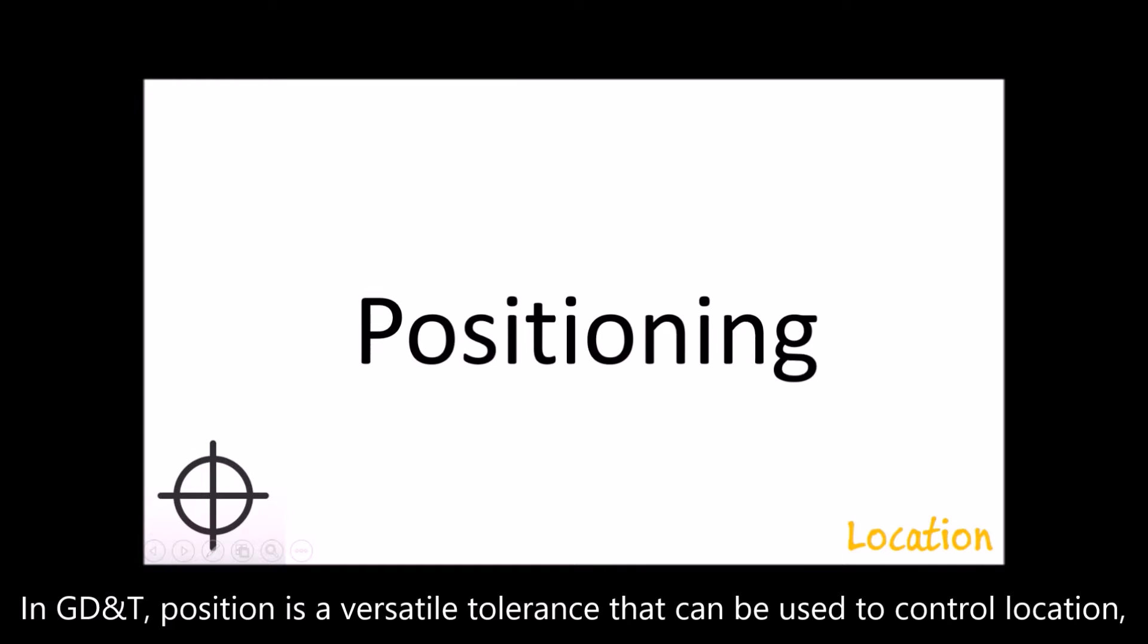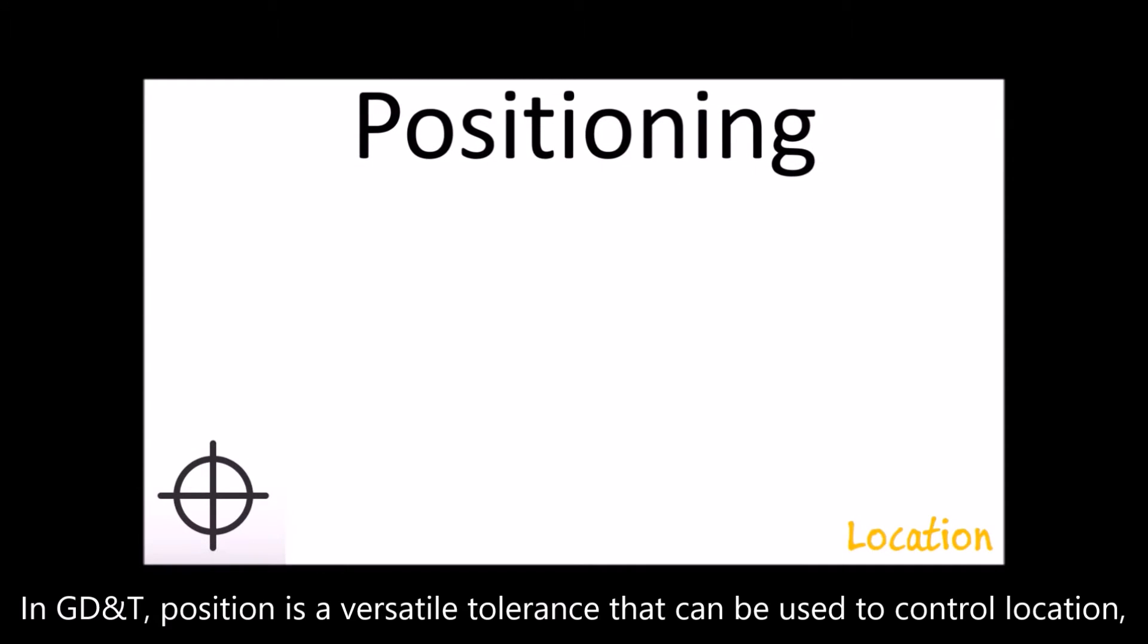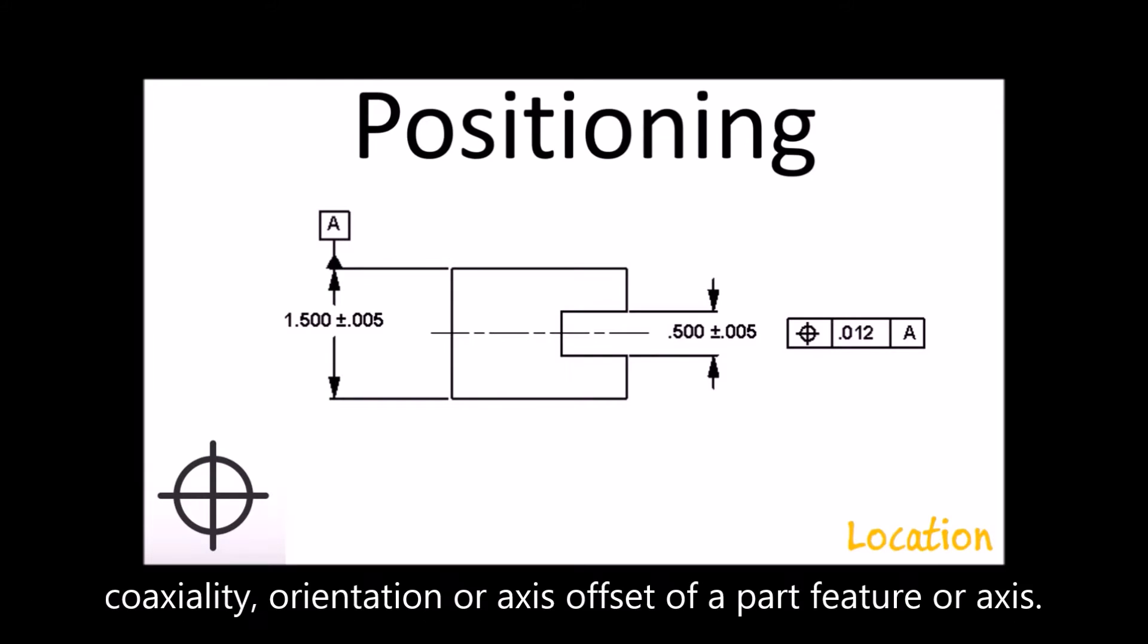In GD&T, position is a versatile tolerance that can be used to control location, coaxiality, orientation, or axis offset of a part feature or axis.